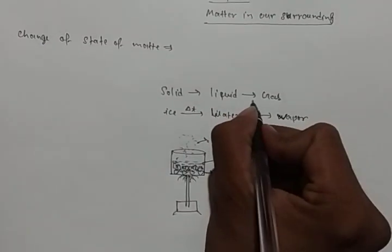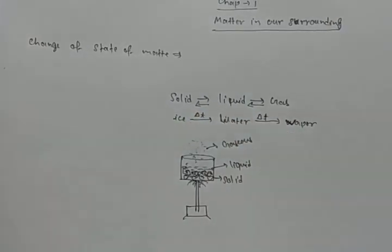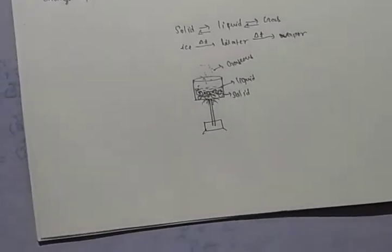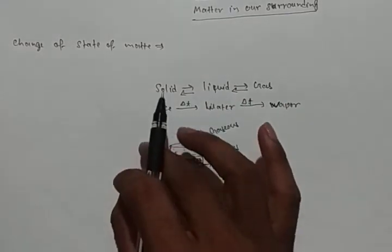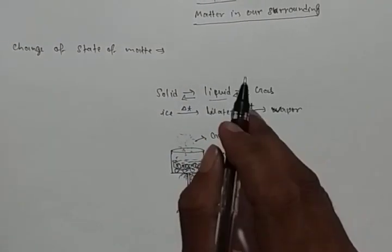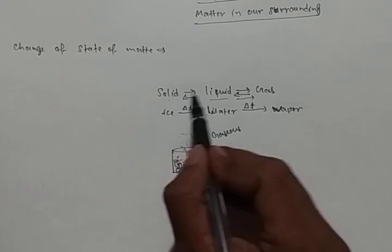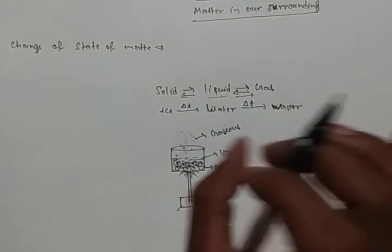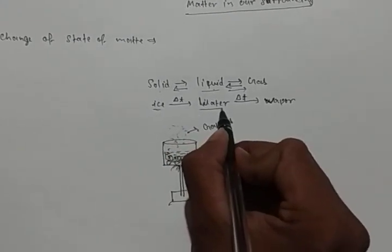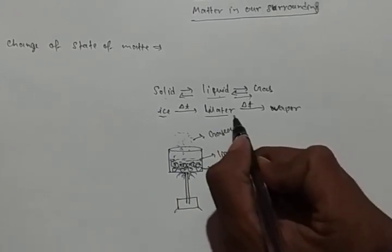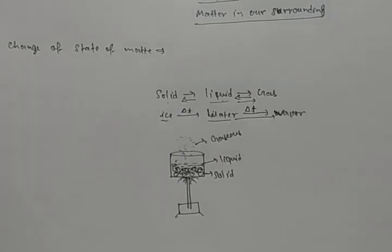This is also a reversible process — gas to liquid, liquid to solid as well. So it is clear that when we give temperature to a solid it converts to liquid, and when we increase temperature further it converts to gas. The most important example: when we give temperature to ice it converts to water, and when we give more temperature to water it converts to vapor. This is the change of state of matter.